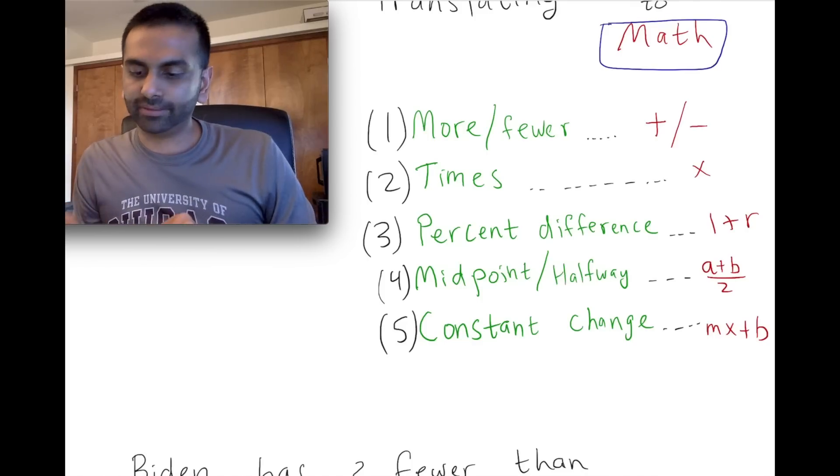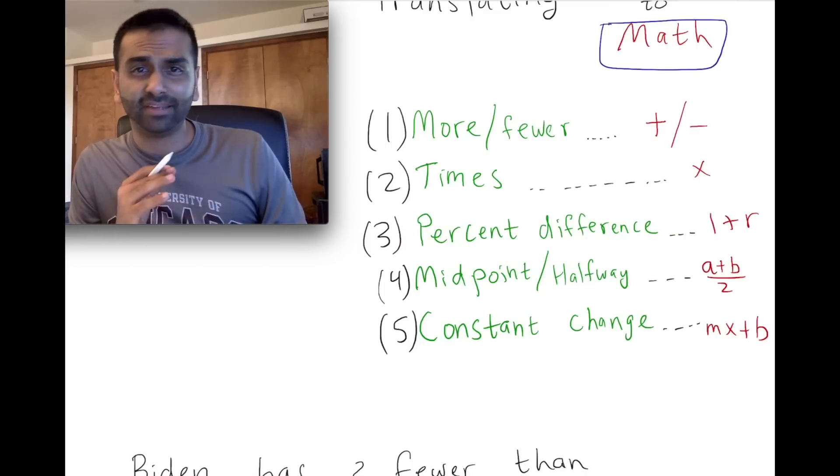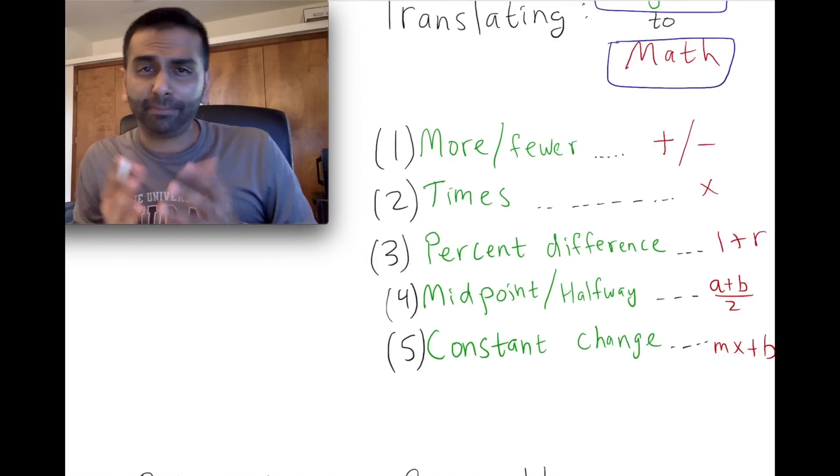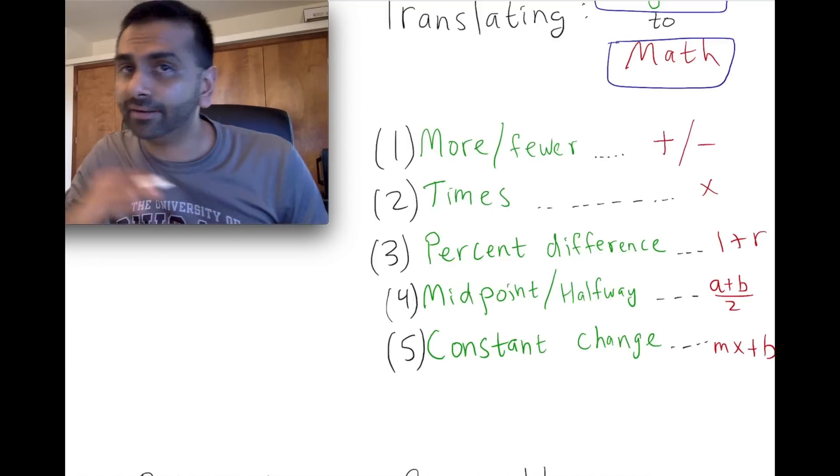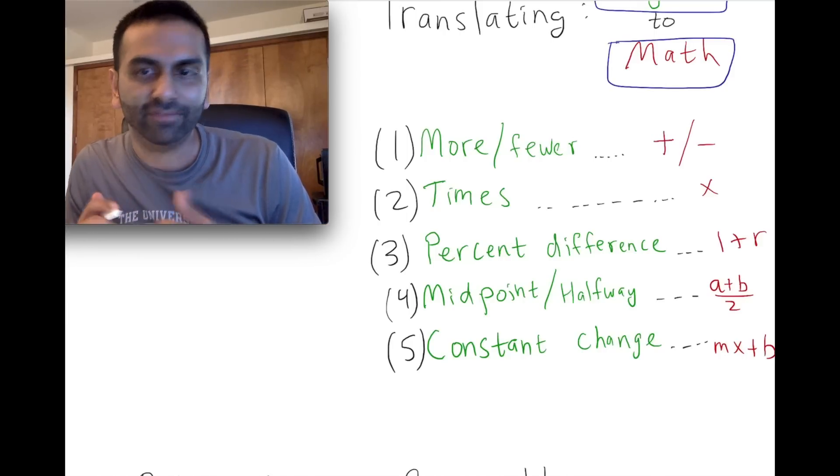Another word is the percentage difference between two things. If I were to say that the population of this town is 17 percent higher than the population of this other town, you basically multiply by 1.17.